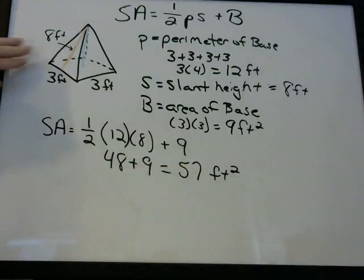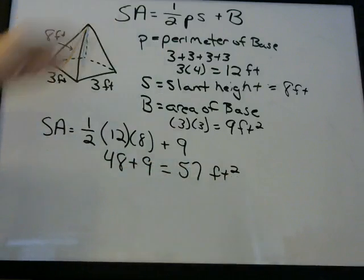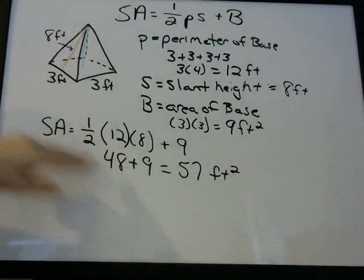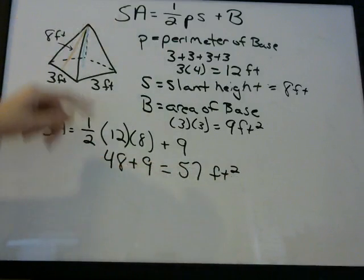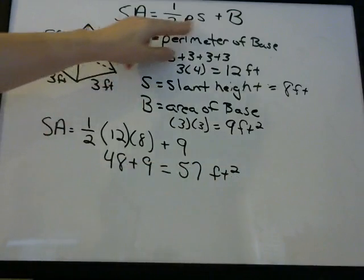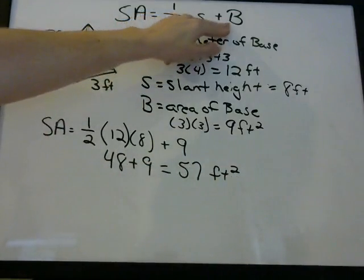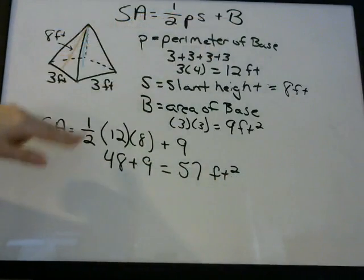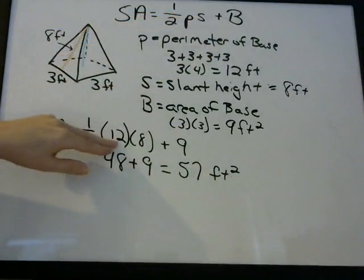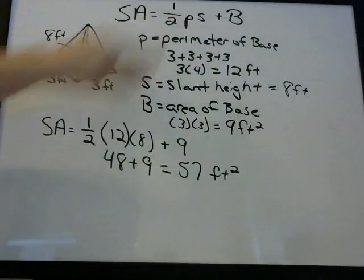So if you were given this pyramid and asked to find the surface area, this is how you would do it. You just figure out what P is, what S is, what B is, and then plug those numbers into the formula.